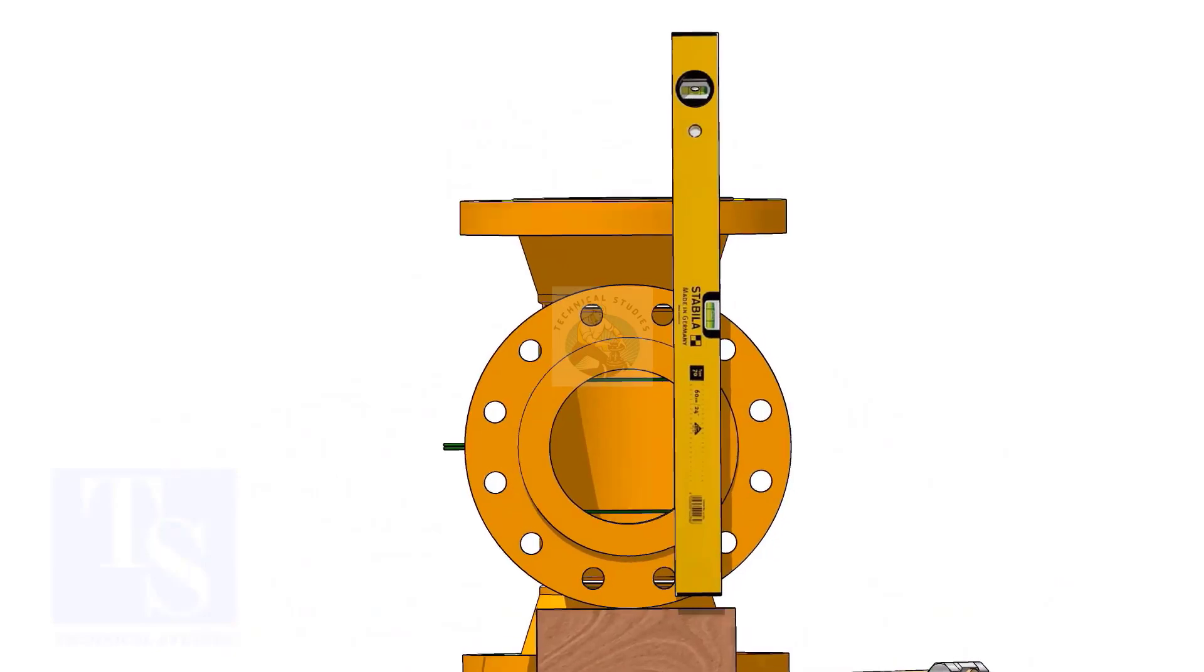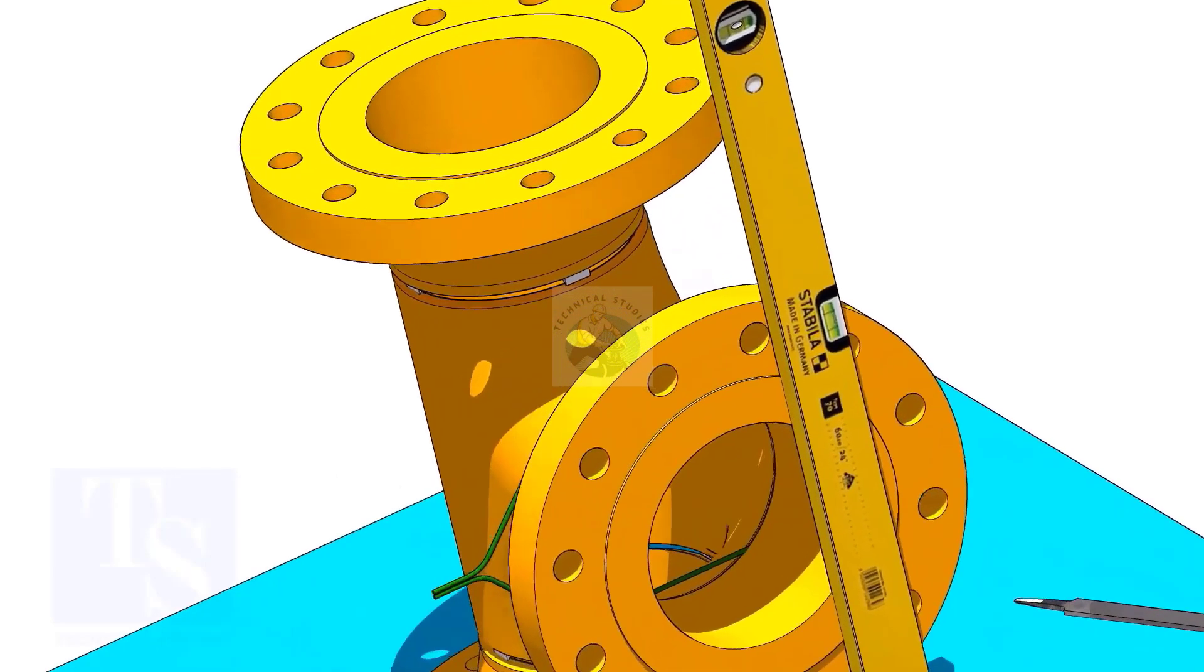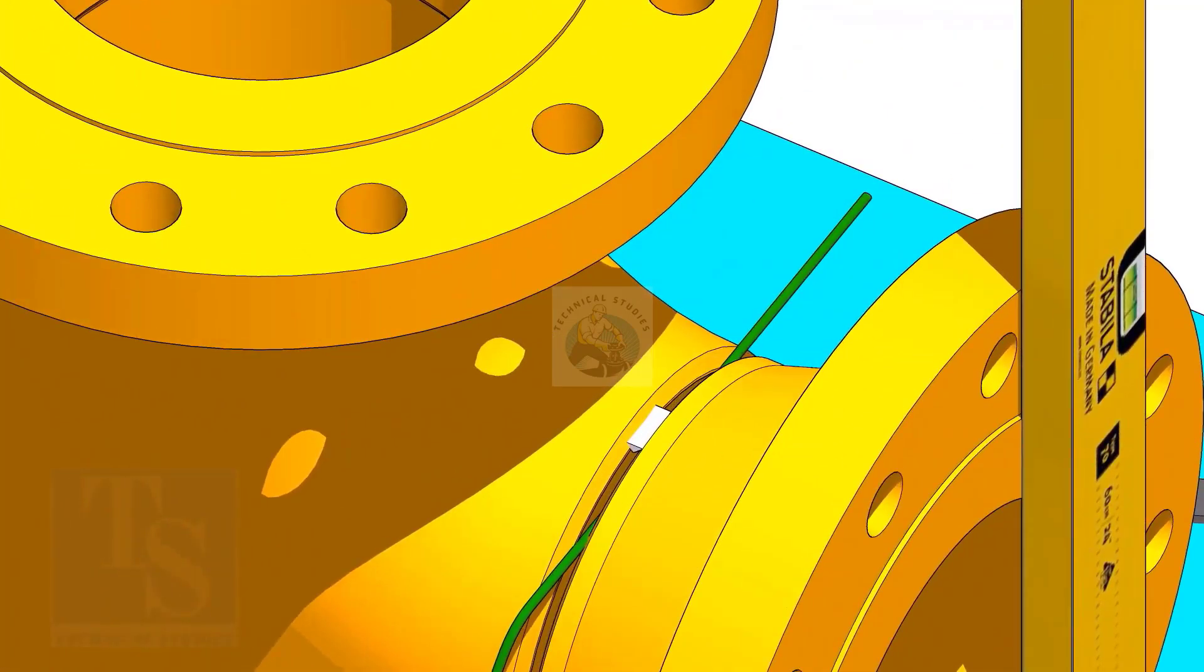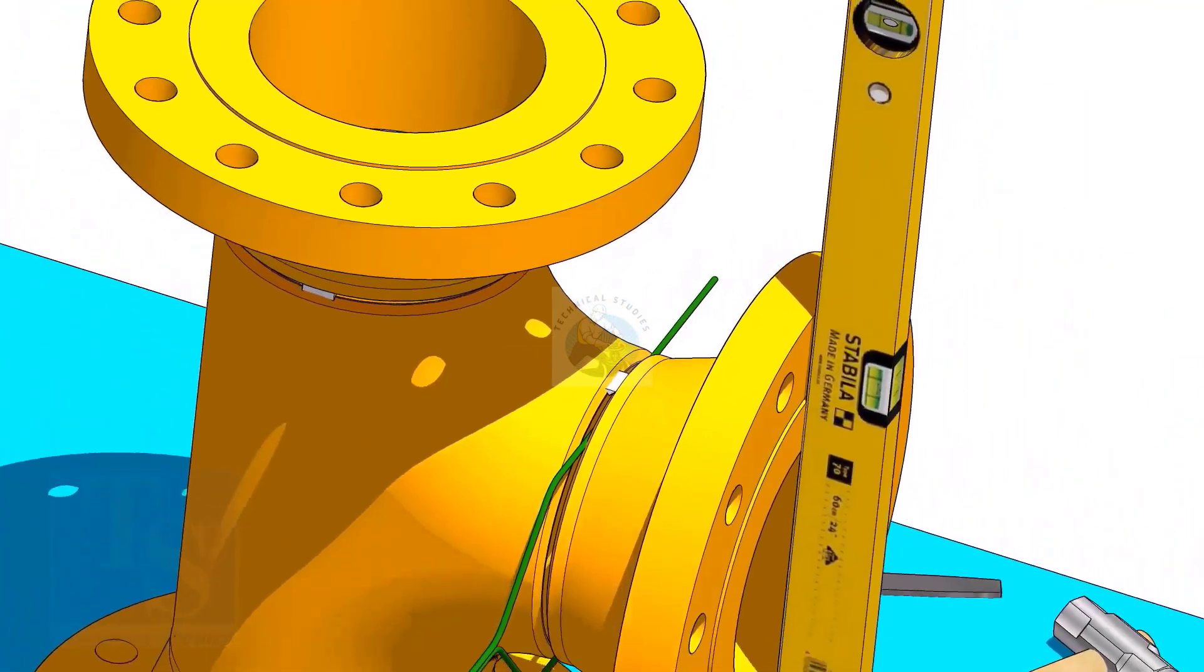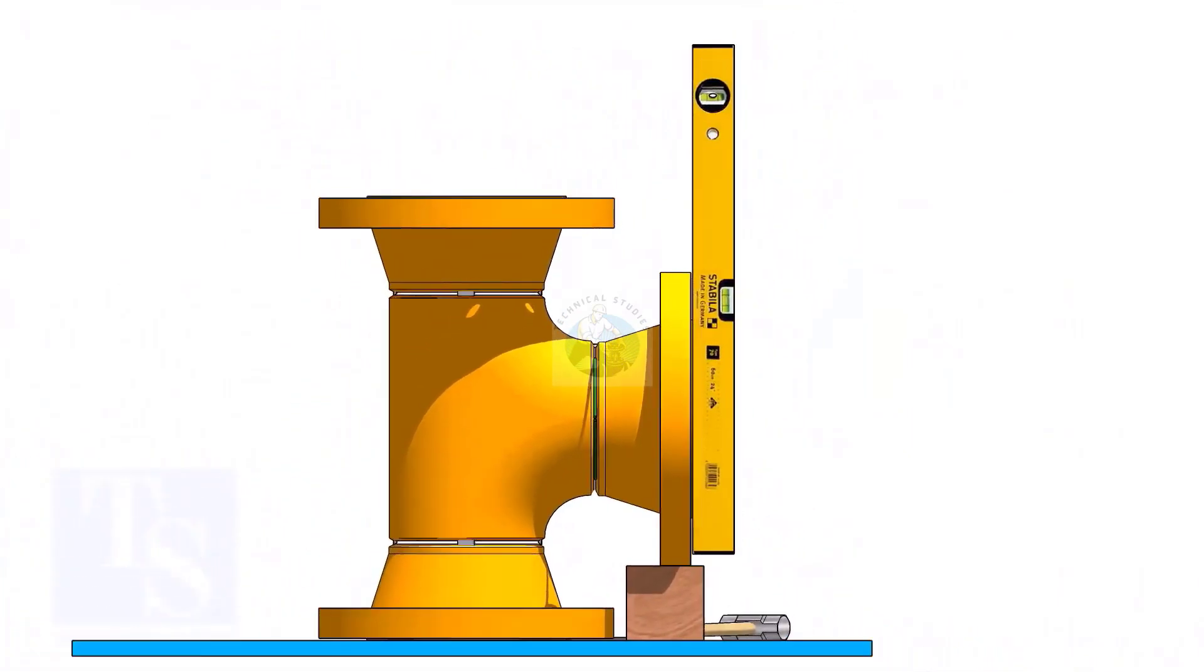Correct the plumbness of the flange holes, as shown. Tack weld on the top side. Correct the flange vertically, and tack weld below.